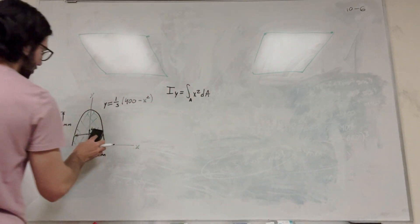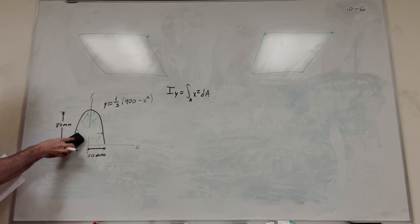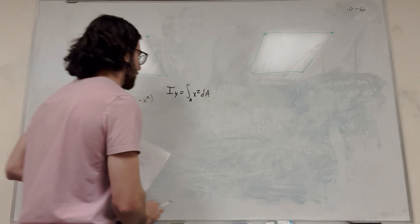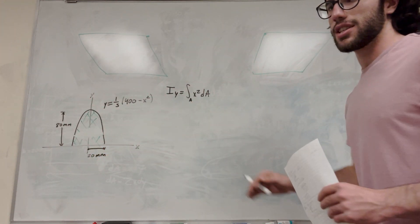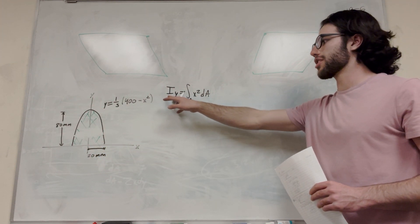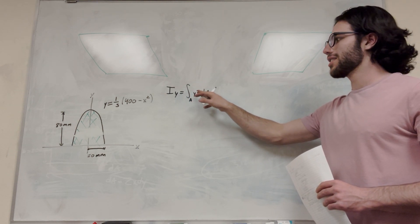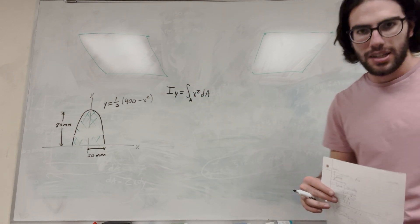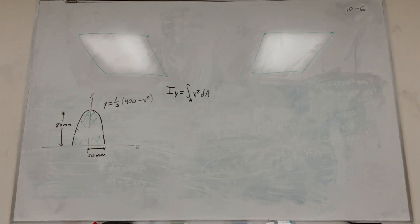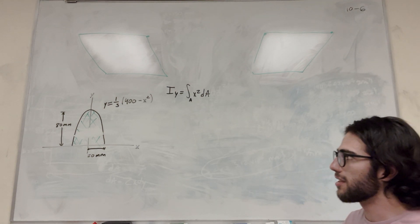I have this left over from the last problem, so don't worry about that. When we have this integral here, this is the formula we're going to use. The moment of inertia on the y is equal to the integral over the area of x squared dA. So what we need to do is figure out what dA is, and then we need to rearrange this equation.